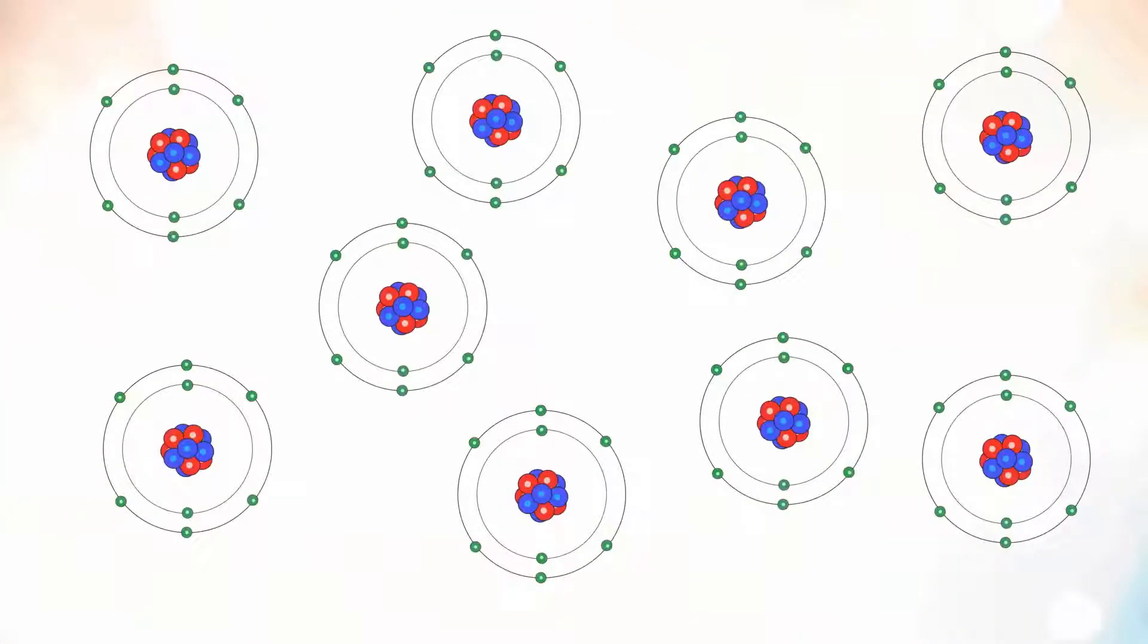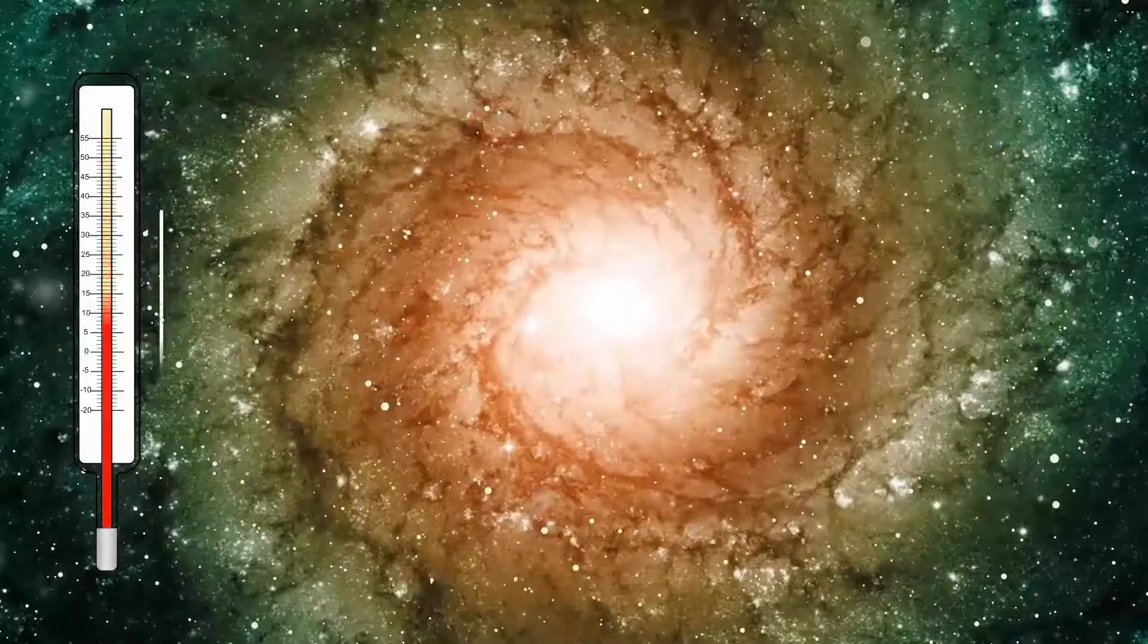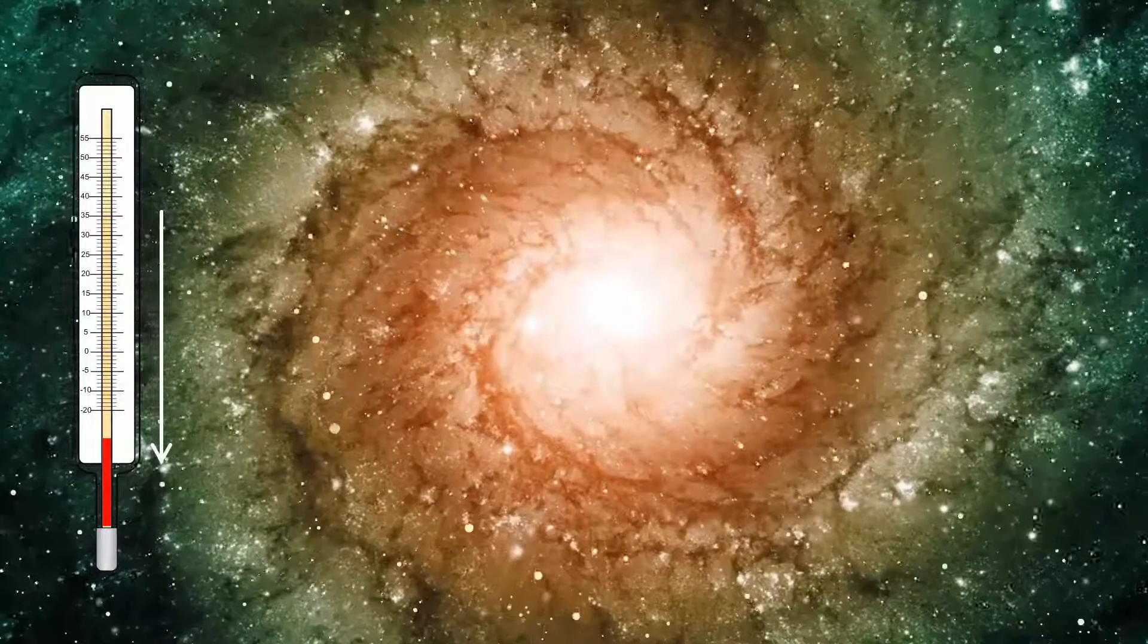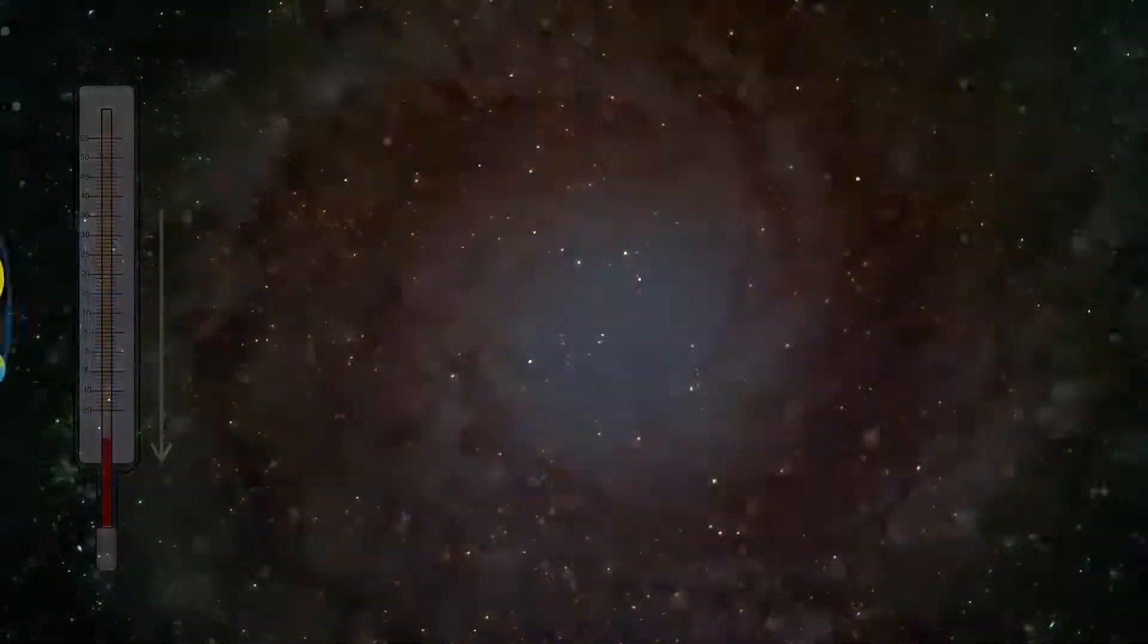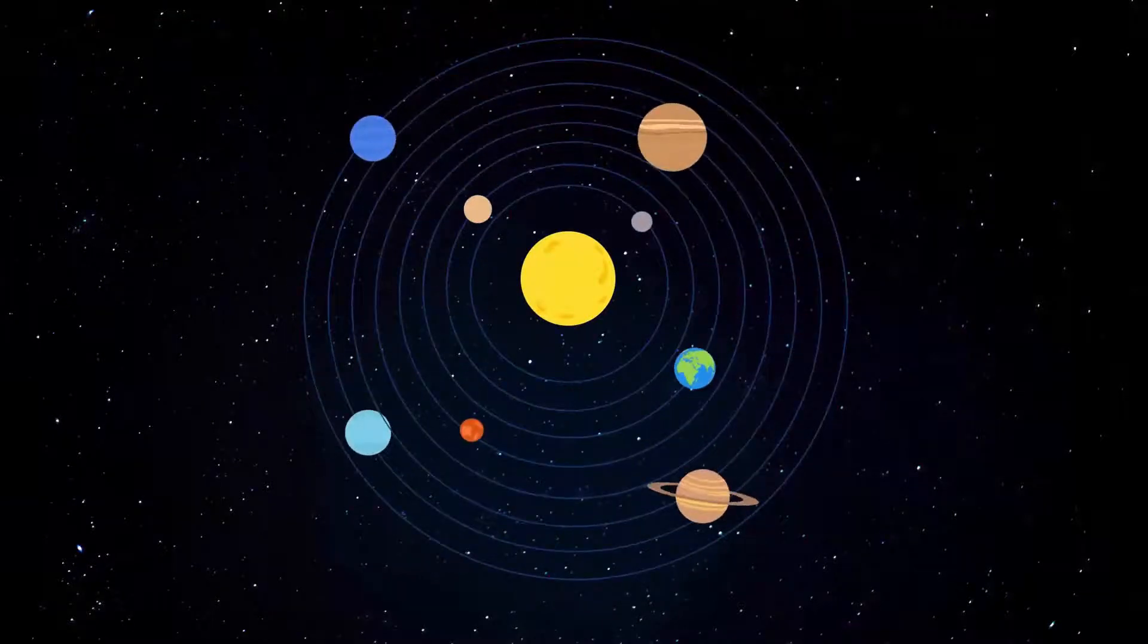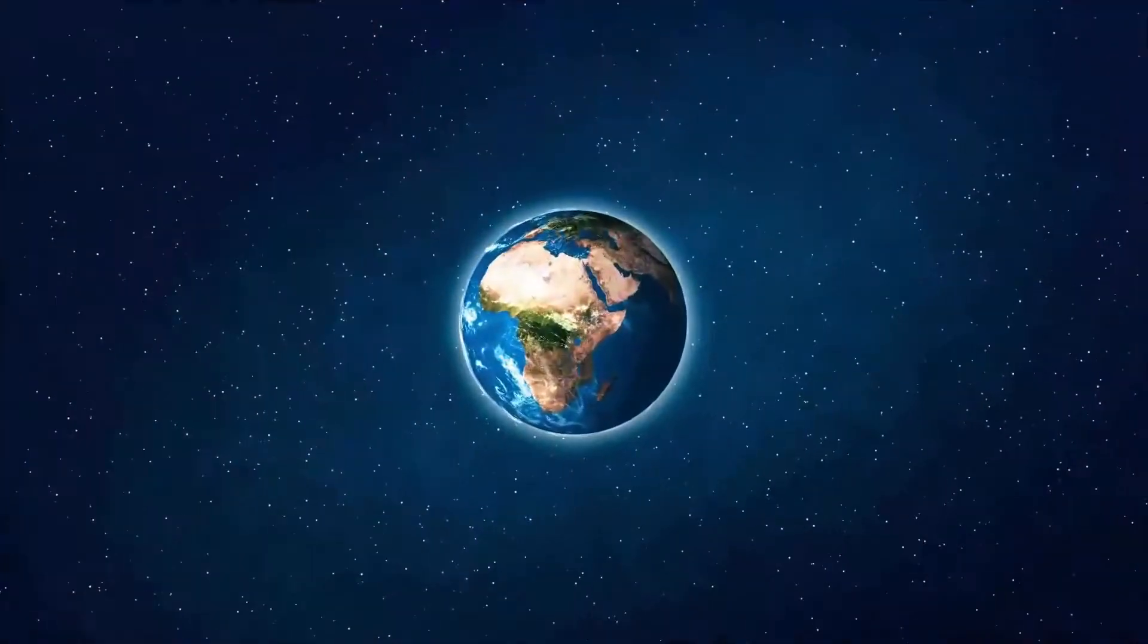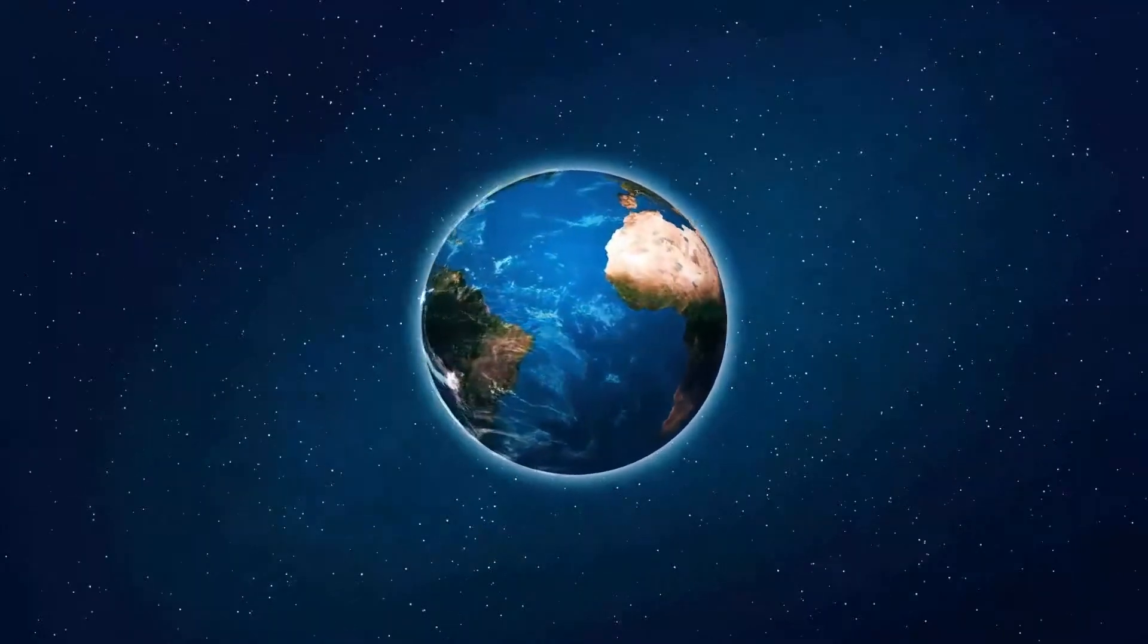Atoms began to form as soon as the singularity exploded. After a period of time, the temperature dropped and clusters of stars called galaxies began to form. Some billion years later, planets began to be created. And an additional million years later, life started to evolve on the planet Earth.